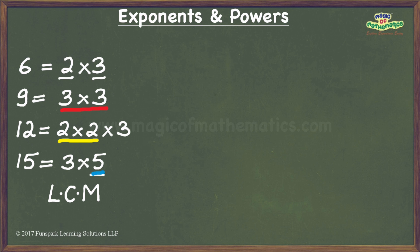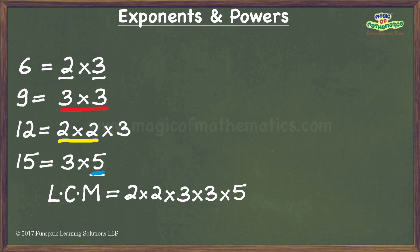Now I can find the LCM by computing the product of the identified occurrences of the factors. In other words, the LCM of the given numbers is 2 times 2 times 3 times 3 times 5. I will now examine this product to see whether the LCM is a perfect square. For this, I will use the fact that if a number is a perfect square, its prime factorization can be grouped into pairs of identical factors.